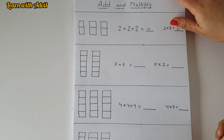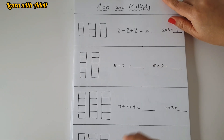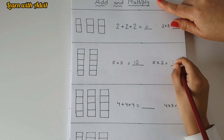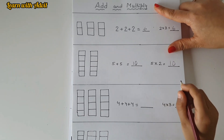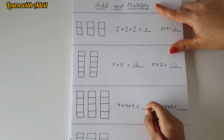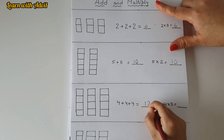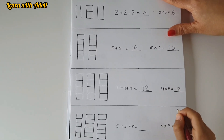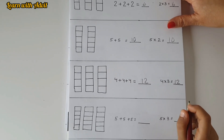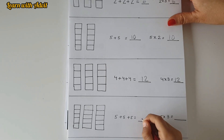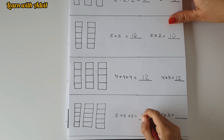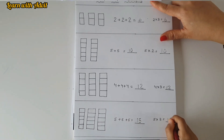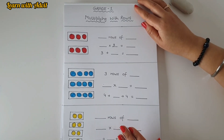That means groups are three and objects are two. Now do the second one: there are two groups of five, so five plus five equals ten, and five times two equals ten. Very good! The third one: there are three groups of four, so four plus four plus four equals twelve, and four times three equals twelve. Good job! The last one: there are three groups of five, so five plus five plus five equals fifteen, and five times three equals fifteen. Very good!